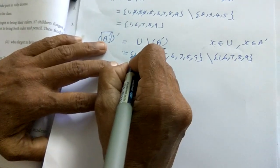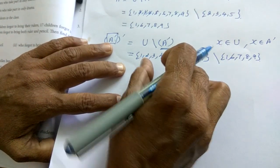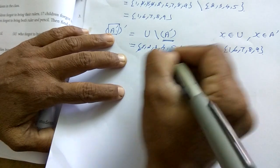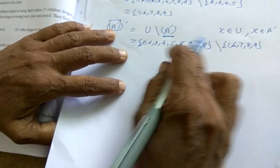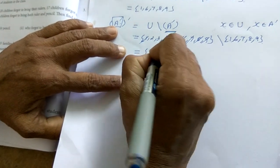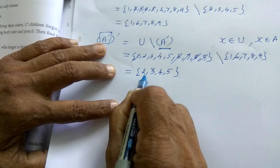Do you follow? So what are the elements you got to strike out here? The elements that belong to universal set alone, other than A dash. So 1, 6, 7, 8, 9. Without striking you can write the answer directly, but for the late bloomers, I am writing this: 2, 3, 4, 5.